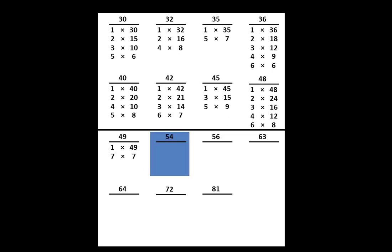Let's move to the number 54. On your paper, write that we can think of 54 as 1 times 54 or 2 times 27 or 3 times 18 or 6 times 9. Those are all the factor pairs of 54.